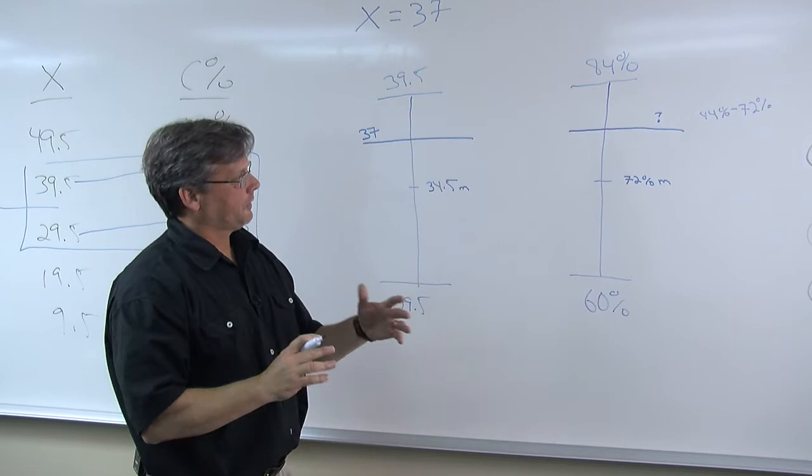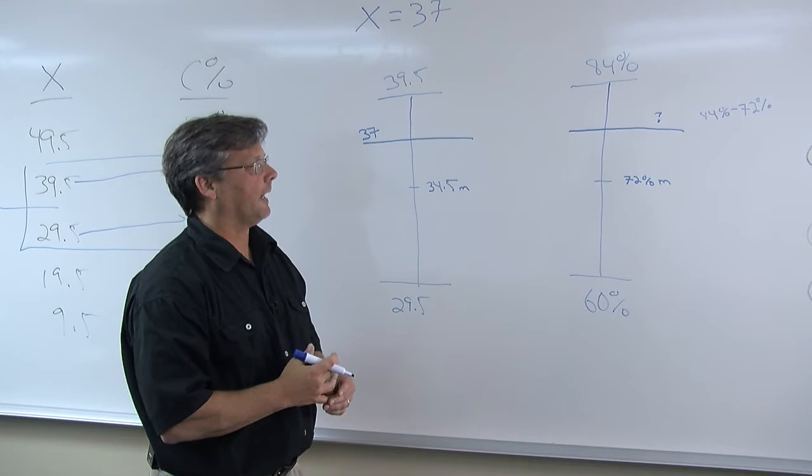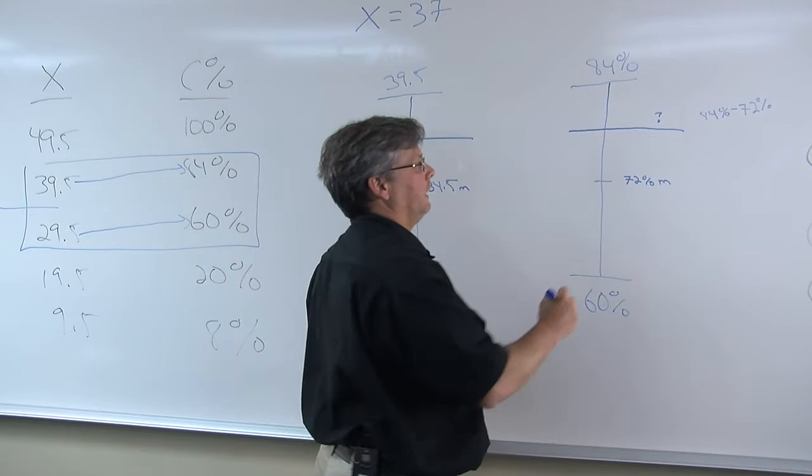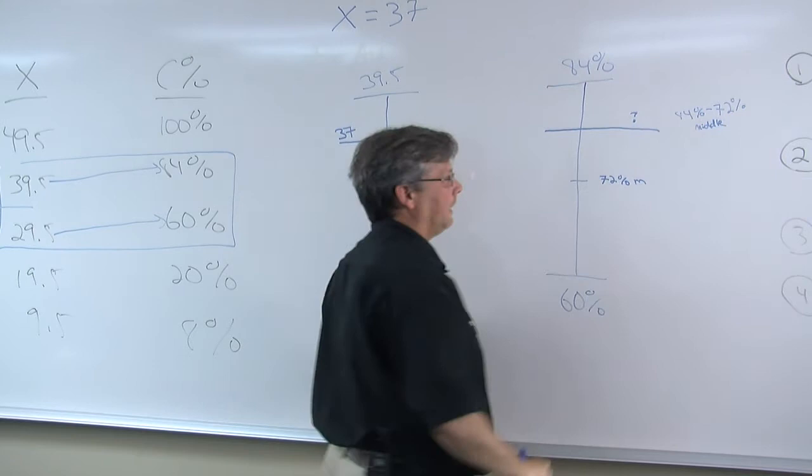And then as you start to look at things, you might notice that it looks like we're roughly in the middle of that top half. So we're not going to be very close to 84 or 72, but sort of in the middle of the two. Middle of that range, the middle point of the top half.